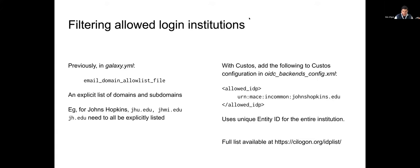The other thing this allows is filtering login institutions. If a given Galaxy deployment does not want to allow any institution from that list of 3,000 but wants institution-based logins only, that was enabled through an email domain allow-list file where you had to list domains and subdomains. For Hopkins, there were at least three subdomains that needed to be explicitly listed because of the way InCommon IDP providers work — there has to be a unique ID corresponding to a given IDP. Now we can specify a list that includes all subdomains. The full list is available for listing which identity providers should be included, and that list of 3,000 will be filtered to whatever is included.